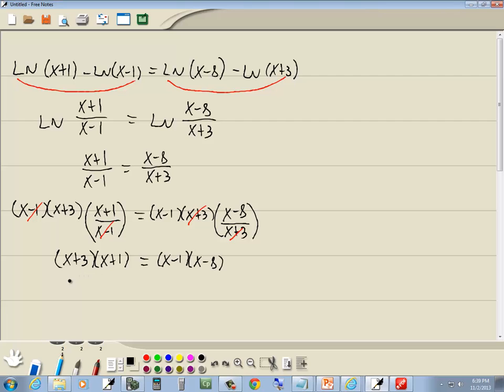Multiply everything through. x times x is x squared. x times 1 is 1x or x. 3 times x is 3x. 3 times 1 is 3. Over on this side, x times x is x squared. x times negative 8 is negative 8x. Negative 1 times x is negative 1x or negative x. Negative 1 times negative 8 is a positive 8. Now notice that they both have an x squared on each side. Since they have the same term on both sides, you can just drop that part.